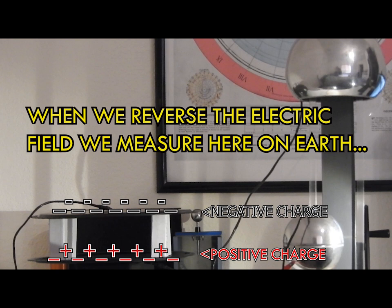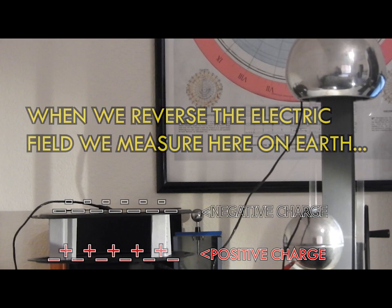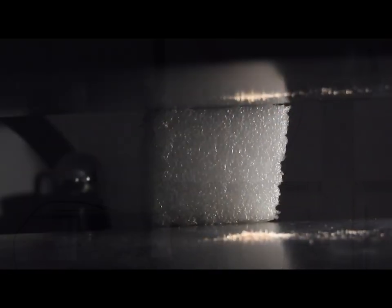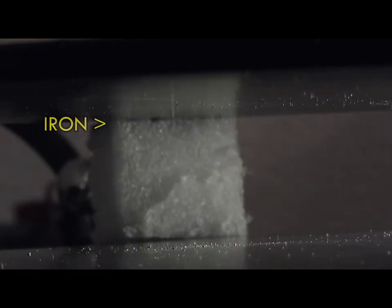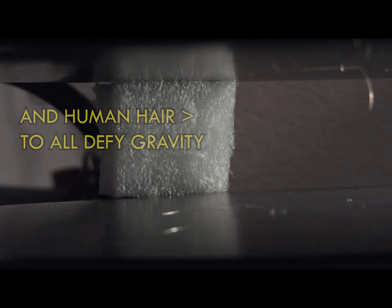When we reverse the polarity of the electric field and put a negative surface above a positive one, we can reverse this electrostatic phenomenon and get things to stick to the upper plate as if it were the ground. This works with all types of matter. You can move wood, iron filings, and even human hair with these forces.